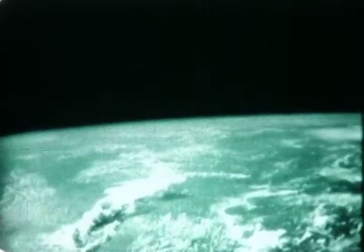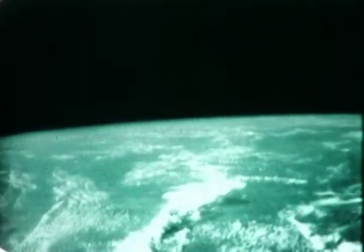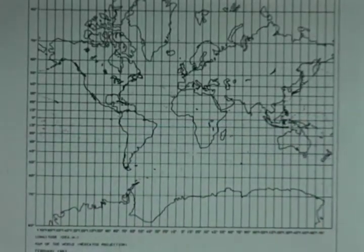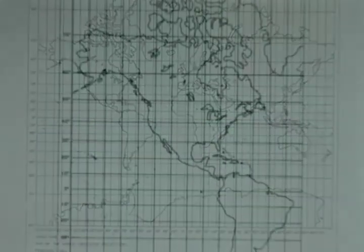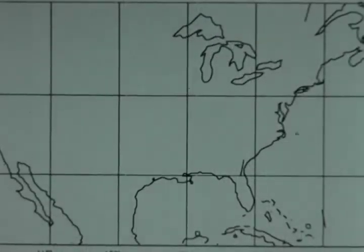The SC4020 draws maps for such uses as weather plotting, population studies, or strategic situations. The area to be mapped may be projected in the form projector and the Charactron tube generates the variable data. Or the entire map is generated on the Charactron tube face, allowing expansion of any area to show more detail by computer command.